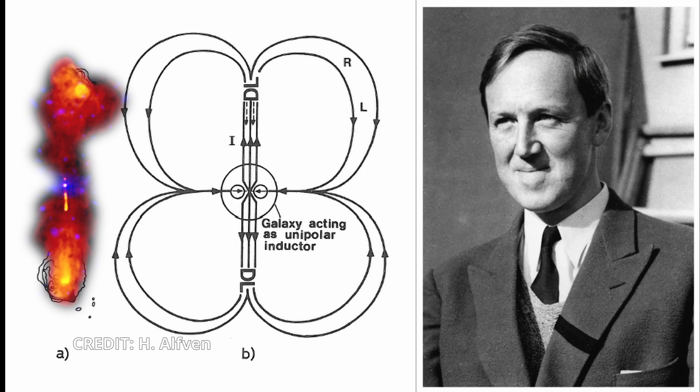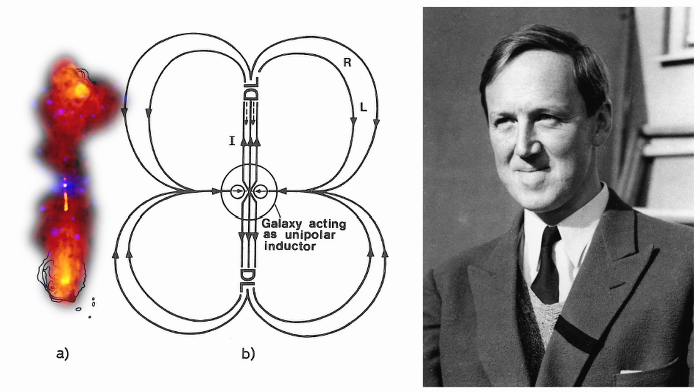Hannes Alfvén felt that the lobes in the radio galaxies were caused by double layers further out which were part of a galactic circuit which powered the galaxy. In this theory, the galaxy would have jets that push material outwards along its axis, but a significant distance from the galaxy, a double layer would form.